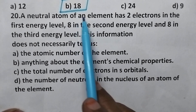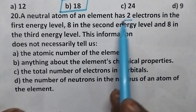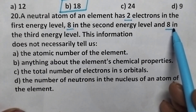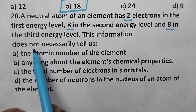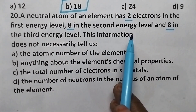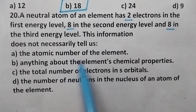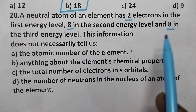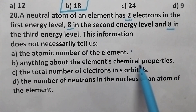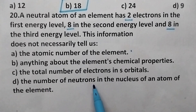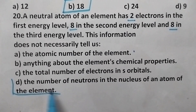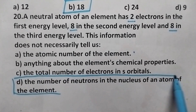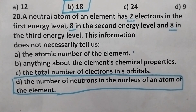A neutral atom of an element has 2 electrons in the first level, 8 in the second, and 8 in the third. This information does not necessarily tell us what? From this we can predict the atomic number, chemical properties (it has octet configuration), and the total number of S electrons. However, it is not possible to predict the number of neutrons in the nucleus. So option D is the right answer.